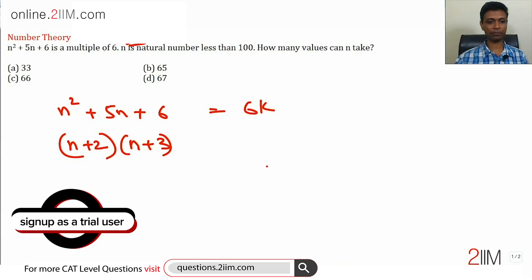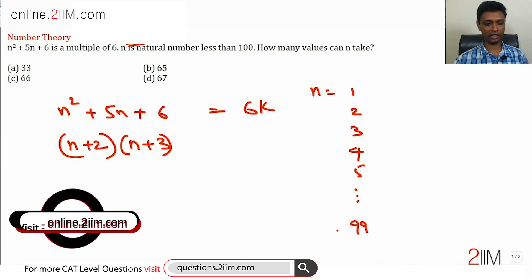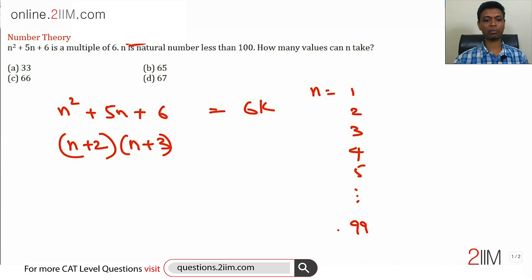(n+2)(n+3) - n can be 1, 2, 3, 4, 5, all the way till 99. n is a natural number less than 100. How many values can n take? Now (n+2)(n+3) is definitely even, so all we need to do is worry about whether it's a multiple of 3.